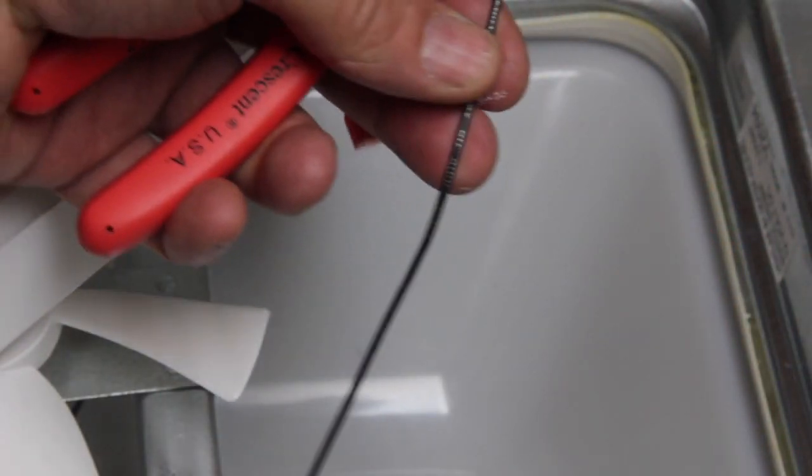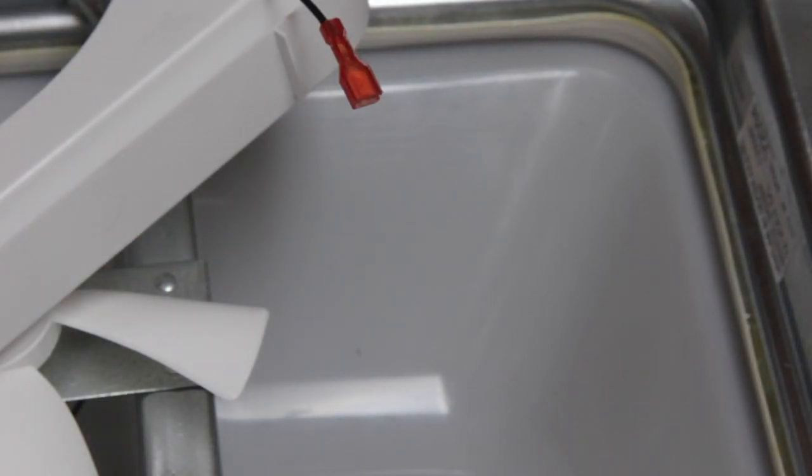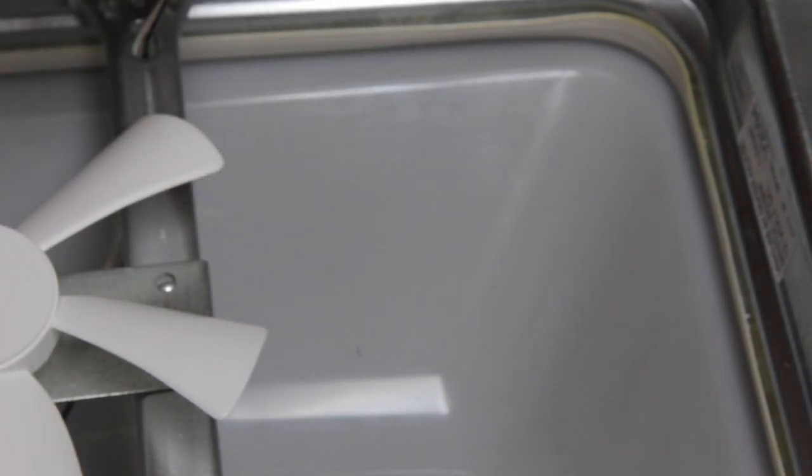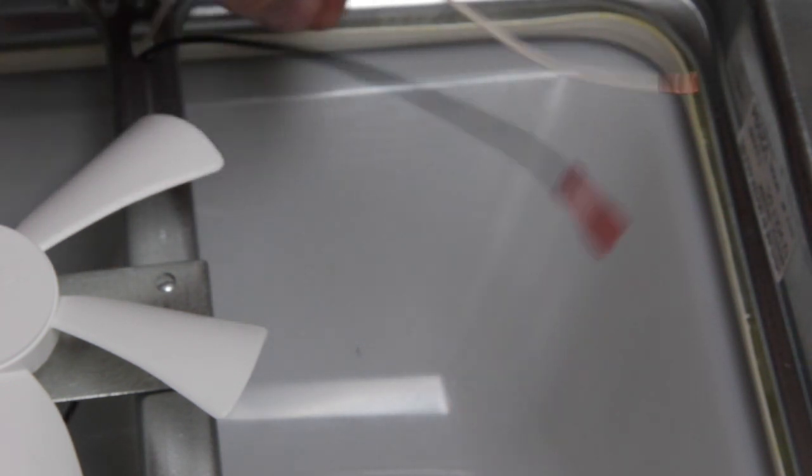The wire that is on the switch side we don't need anymore, so we can put that off to the side. What you're left with now is the black wire to the motor and the white wire to the motor.